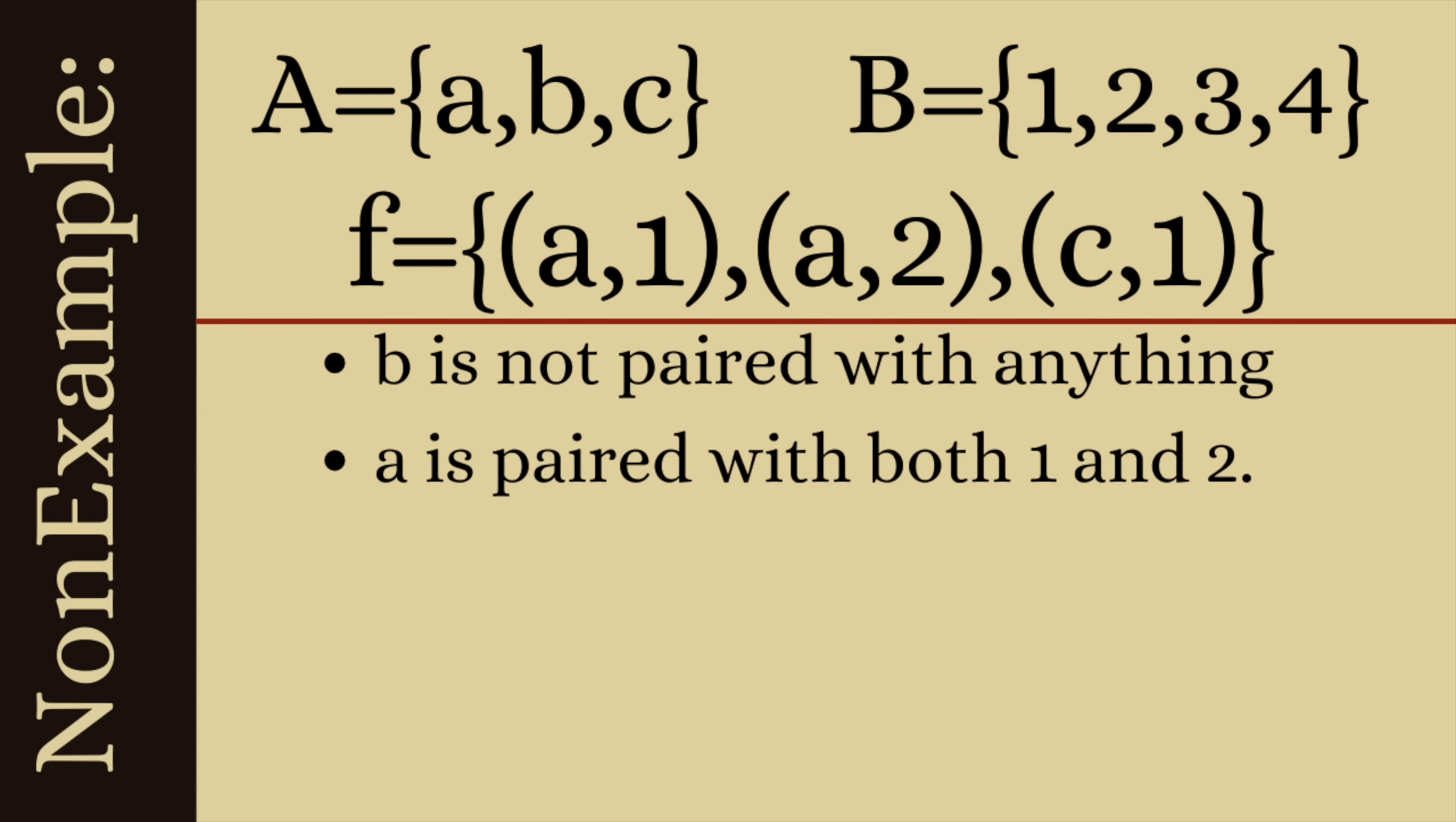Notice this fails to be a function for two reasons. First off b is not paired with anything and let's recall that by the definition every element of the domain has to be paired with something from the codomain. It also fails the rule that each thing can only be paired with one element of the codomain and that's because a is paired with both 1 and 2.